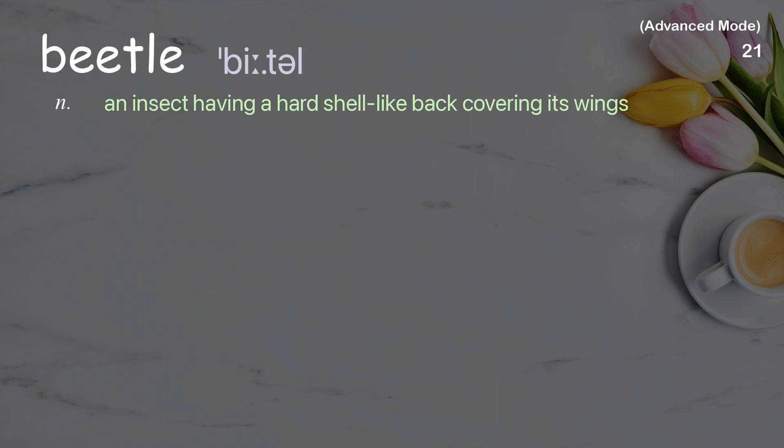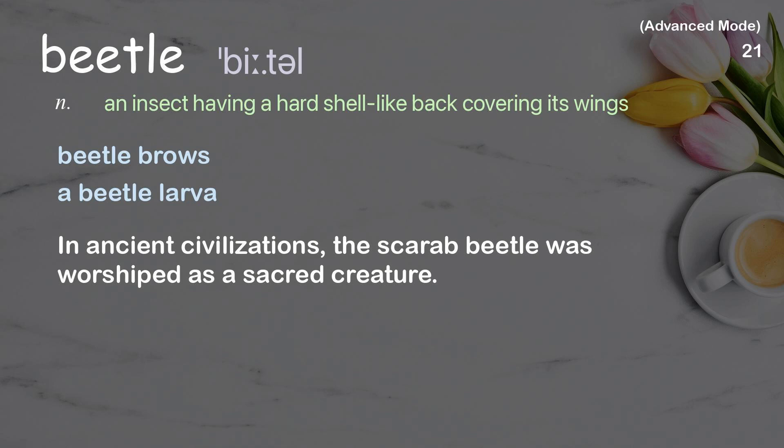Beetle. An insect having a hard shell-like back covering its wings. Examples: beetle larvae. In ancient civilizations, the scarab beetle was worshipped as a sacred creature.